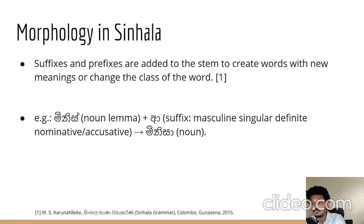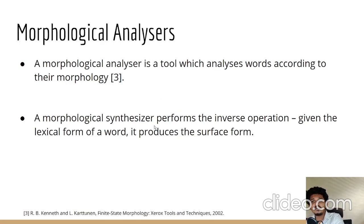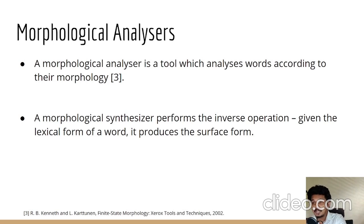A morphological analyzer is a tool which analyzes words according to their morphology, mapping between the surface form and the lexical form. A morphological synthesizer performs the reverse operation — given the lexical form of a word, it produces the surface form. For example, to the noun lemma 'minis', adding the suffix 'a' indicates the masculine, singular, definite, nominative or accusative form, giving the result 'minisa'.